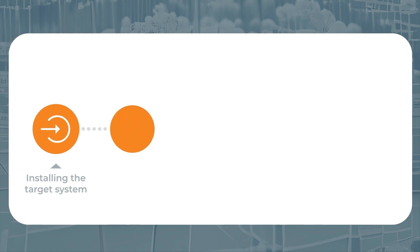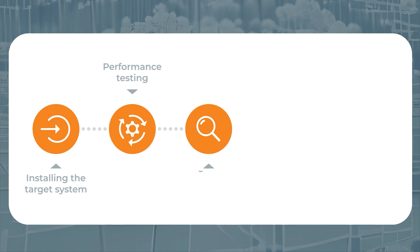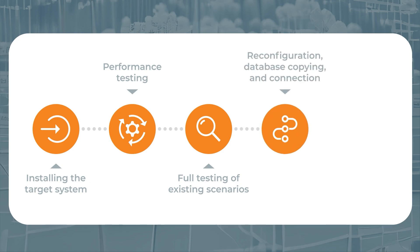Let me give you a bit more detail on this process. After the new system — in other words, the target system — is installed, our PortaOne team will need to conduct performance testing. Then you, as the owner of this new system, will need to conduct a series of further tests on all the main scenarios you are using in production right now. After that, both the old and the new systems will need to be reconfigured, and all of the databases will need to be copied over from the old system to the new system.